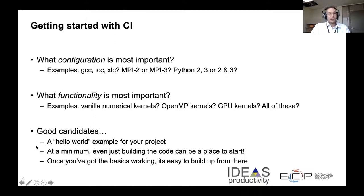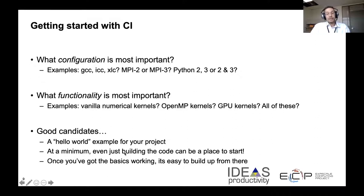We're using cloud resources and having shorter running tests is always nice because you get instant feedback. Good candidates for getting started with CI are just running a hello world example for your project. I would strongly recommend running a hello world example with a simple compiled code that links to MPI first, before you actually link in your actual code and test it, just so that you know your testing workflow is doing what you expect. If you can get a simple hello world MPI to work, then you can link in your code and make sure that's working as expected. Even just building your code without running the tests is a great place to start, because the build process failing shows you that a syntax error was introduced. If your CI test can catch syntax errors, then it's already doing a great job.